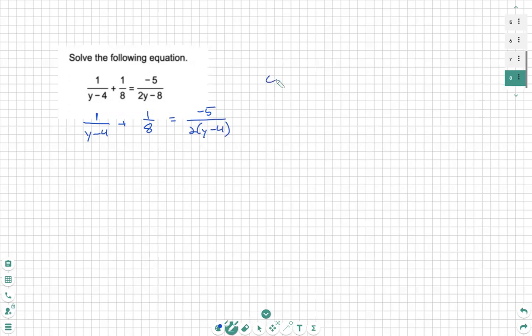Now, we write our common denominator. Our common denominator is all the different pieces. I see y minus 4. I see an 8. I see a 2 and a y minus 4. So clearly, y minus 4 is one of them.